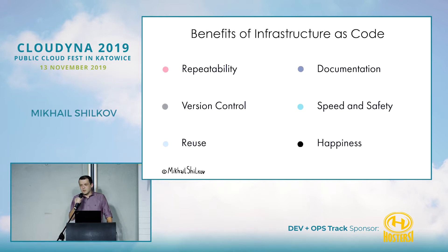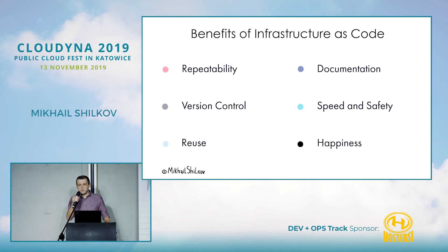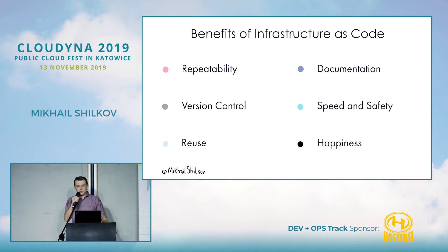The benefits are quite obvious. Deployments are repeatable — if you need 100 servers that are the same, you can get them exactly the same. Your configuration file is also documentation, and it's the best kind because it never lies; it's the source of truth. You can put it in git and have a full history of changes — who changed what and why. Because deployments are more reliable, you tend to make them more often, they're safer, and you iterate faster. You can also reuse pieces of infrastructure across projects or share them with the broader community. And if you feel in control, you're happier with your tools.